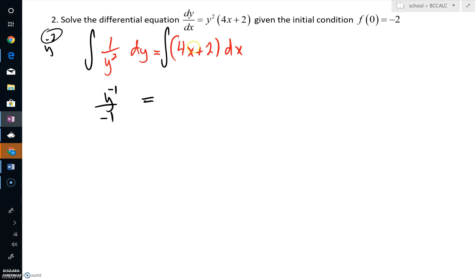Over here on the right side, we bump this up to a 2 and divide by 2. So we'd get 4x squared all over 2, and the antiderivative of 2 is just 2x. But don't forget, of course, we'd have a constant.